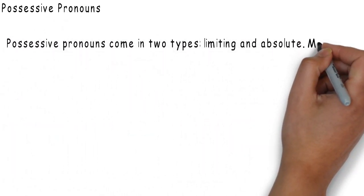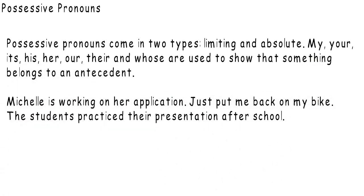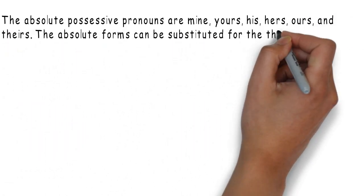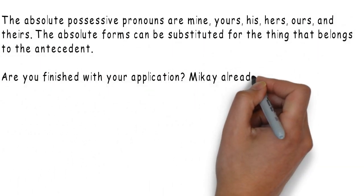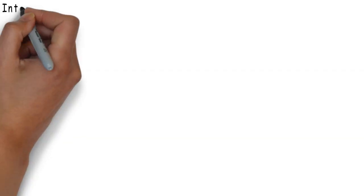Possessive pronouns come in two types: limiting and absolute. My, your, its, his, her, our, their, and whose are used to show that something belongs to an antecedent. For example: 'Michelle is working on her application.' 'Just put me back on my bike.' 'The students practice their presentation after school.' The absolute possessive pronouns are mine, yours, his, hers, ours, and theirs. The absolute forms can be substituted for the thing that belongs to the antecedent: 'Mikai already finished hers.' 'The blue bike is mine.' 'I practiced my speech and the students practiced theirs.' Remember, possessive personal pronouns don't include apostrophes.